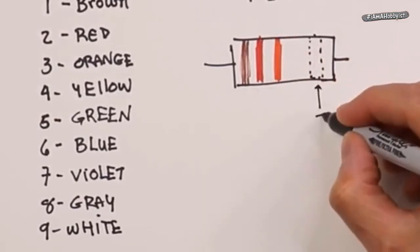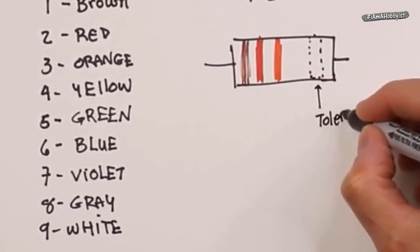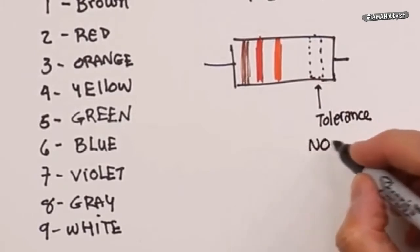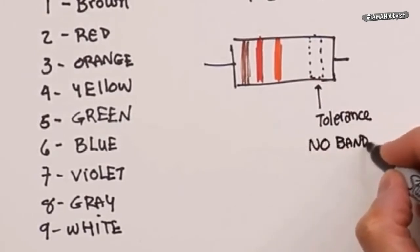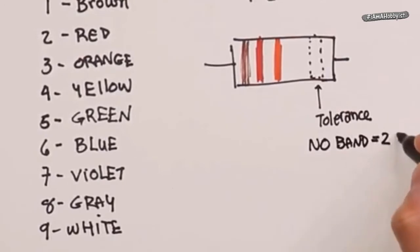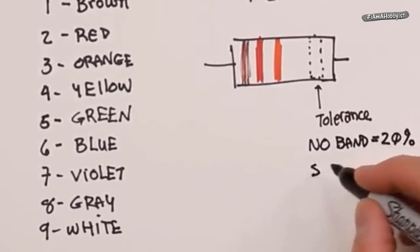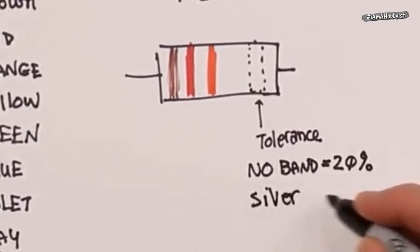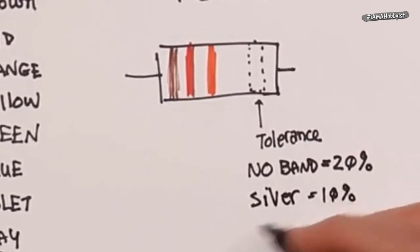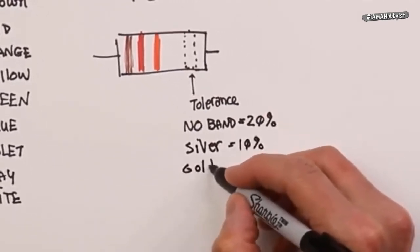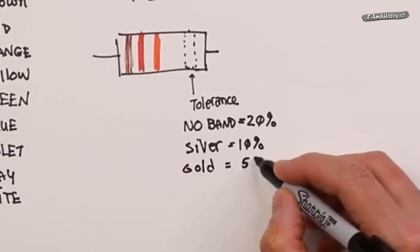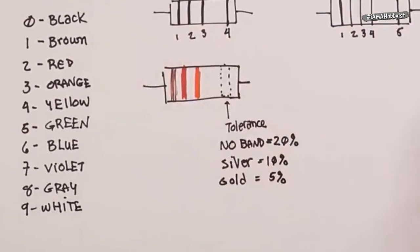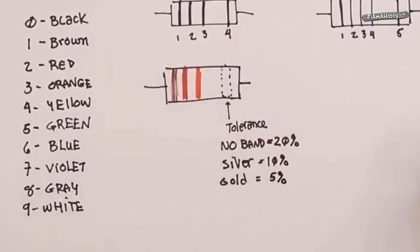I'm going to put this in kind of like ghosted. This band is always your tolerance band. I don't have colors for this, but here's the way it works: if there's no band, that's plus or minus 20%. Those aren't very common anymore. If it's silver, it's plus or minus 10%. If it's gold, it's plus or minus 5%. So if this is exactly what we have—brown, red, orange—what is this equivalent to?